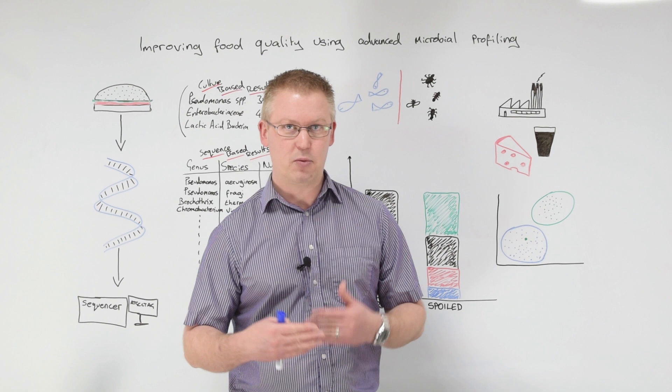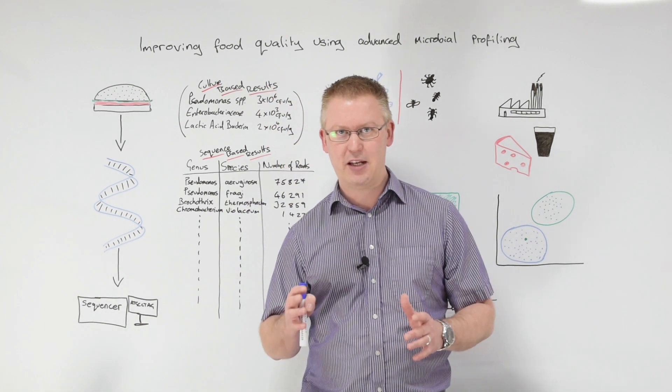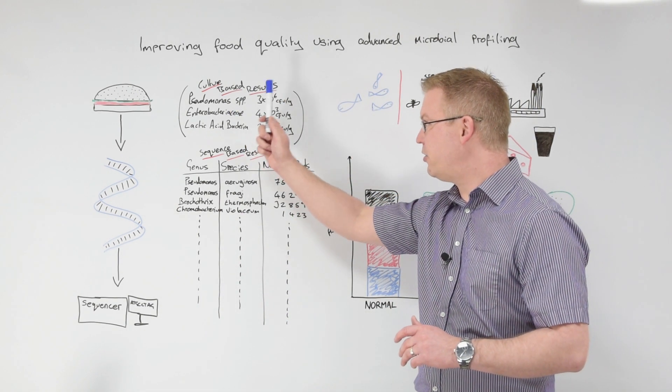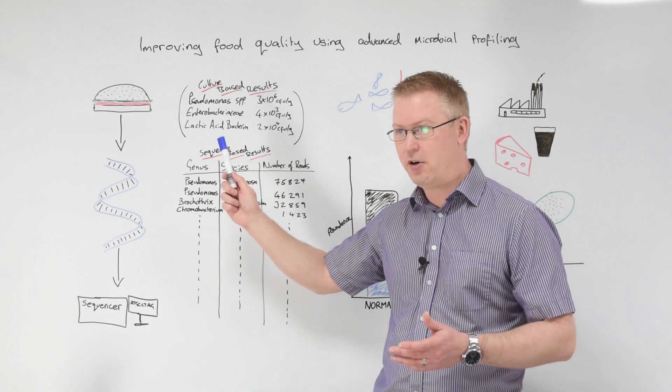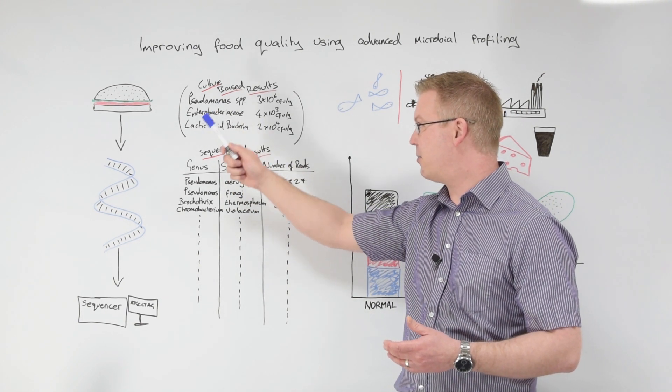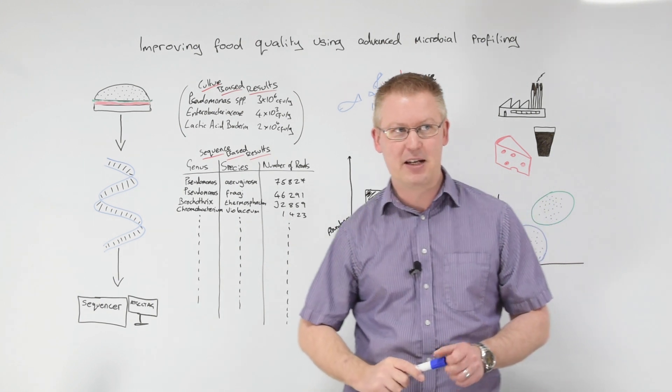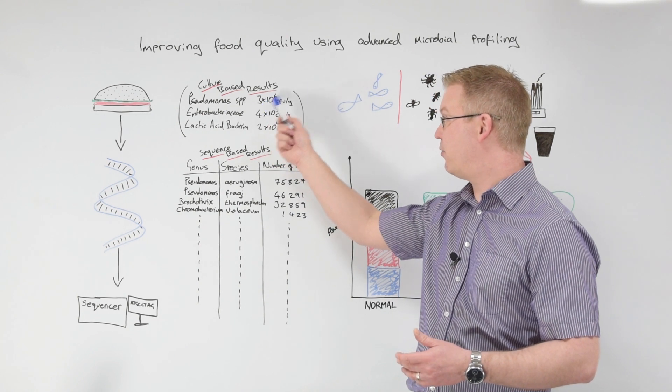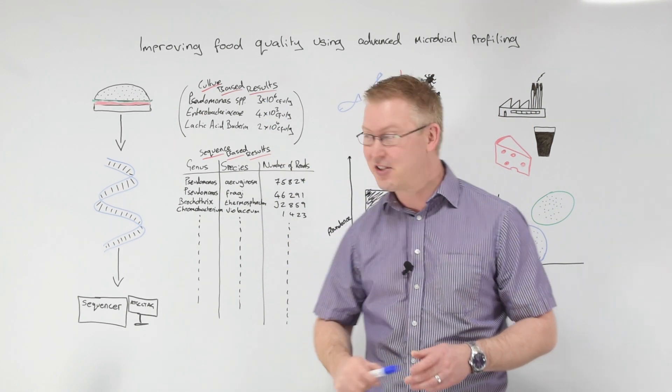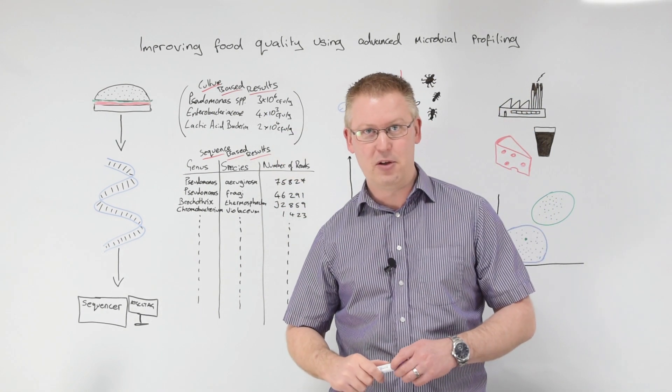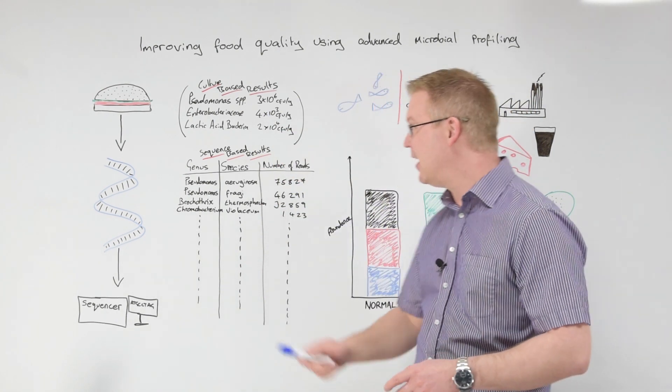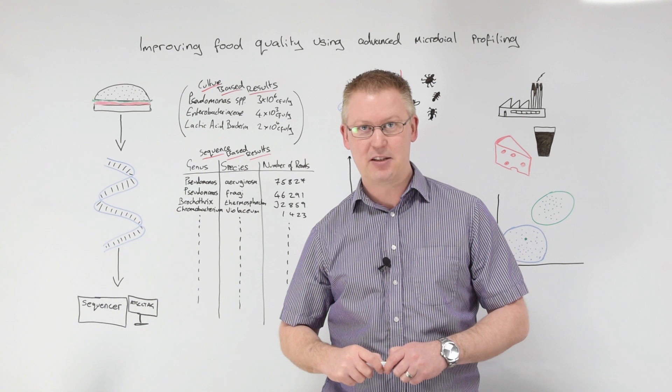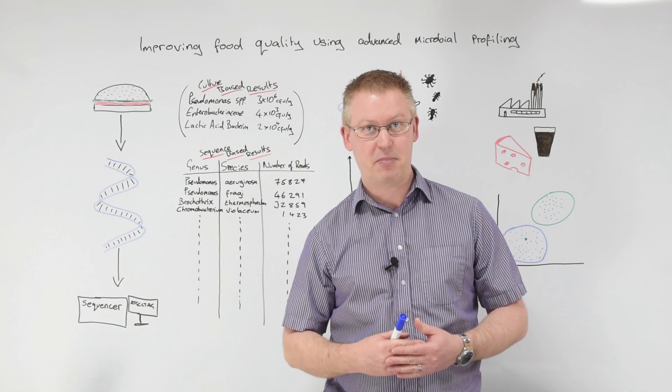So what do we do with that list of names and numbers? Well, let's have a look, first of all, at the sort of data we get from a culture-based analysis. So our culture-based results would look something like this. If I was looking at this product, I would have chosen to look for pseudomonas, Enterobacteriaceae, and Lactic Acid Bacteria. And with that particular sort of analysis, you get the results that come out like this. So we've got 3 times 10 to the 6 colony forming units per gram pseudomonas. We've got 4 times 10 to the 3 colony forming units per gram Enterobacteriaceae, and we've got 2 times 10 to the 4 colony forming units per gram Lactic Acid Bacteria. And that's the sort of information that one expects from a culture-based analysis.